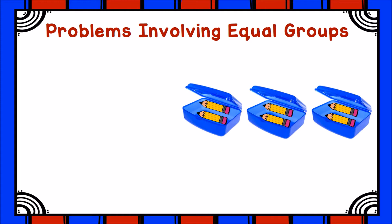There are many ways to solve problems like this. For example, we could draw a picture. I'll start with my three groups. Then I'll put two pencils in each group. Or we could use skip counting: two, four, six. We could also use repeated addition. I have two plus another two plus another two. And finally we could use multiplication.